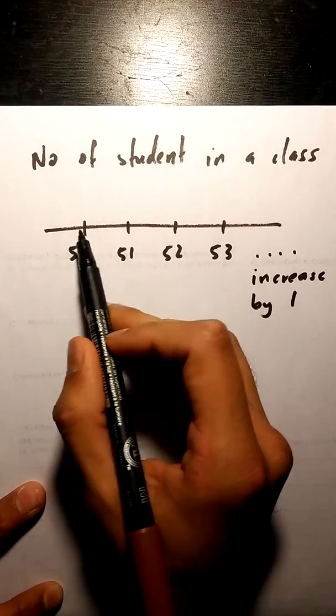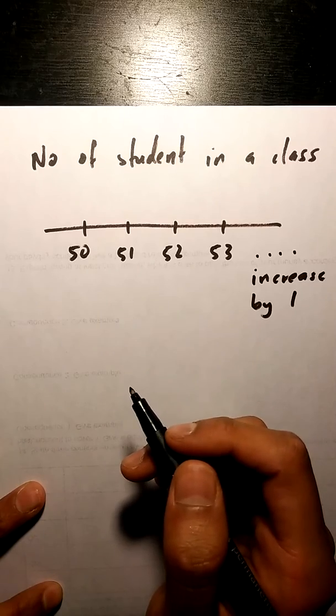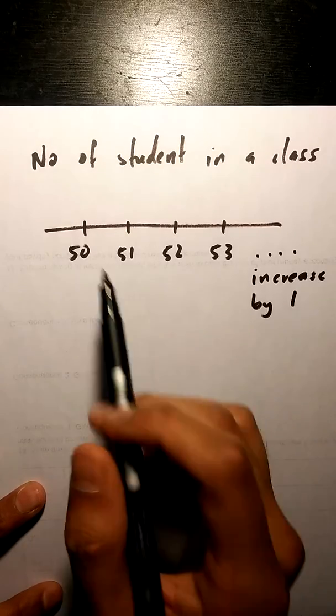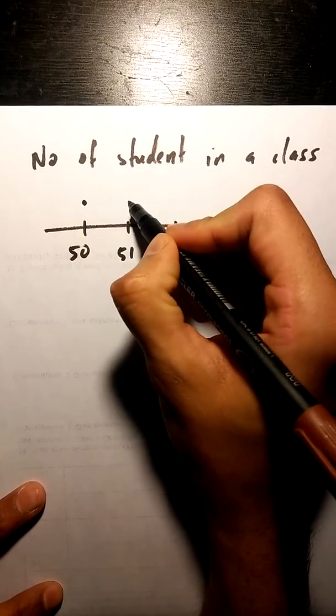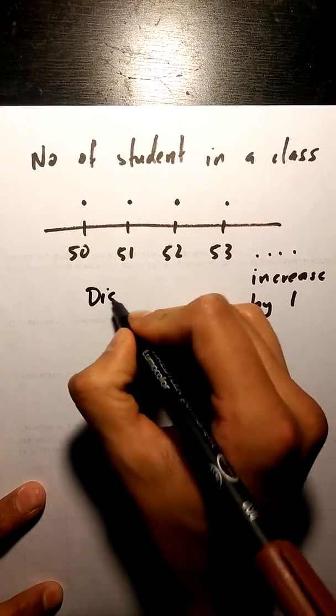If I try to pick a number between these two, is it possible? Can I have 50.5 students? Nope, that's not possible. So you can only pick these exact numbers which makes it a discrete variable.